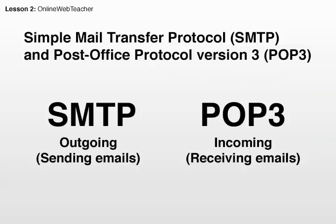SMTP and POP3 are mail protocols. They are usually used to handle emails, and each of them has a particular use. SMTP, which is the Simple Mail Transfer Protocol, is used for outgoing connections — for sending emails — while POP3 is usually used to receive emails, for incoming emails.